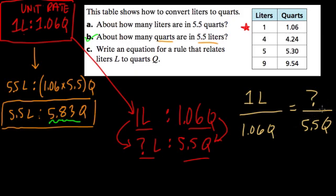And both methods would give you the same thing. Let me use the proportion, though, because I'm going to multiply both sides by 5.5 quarts. And 5.5 quarts, these cancel out.